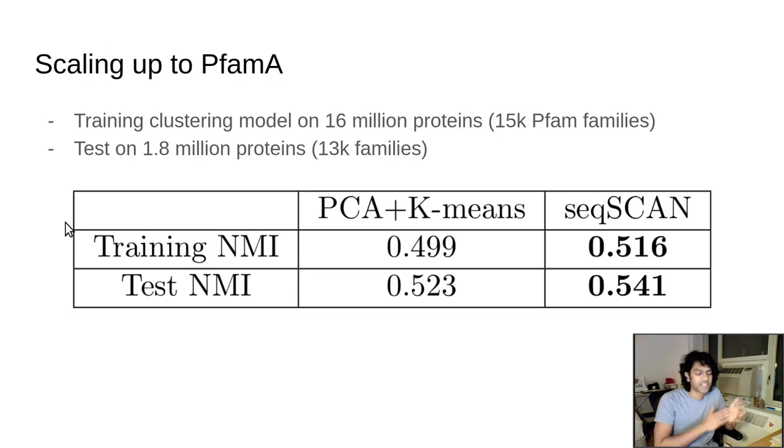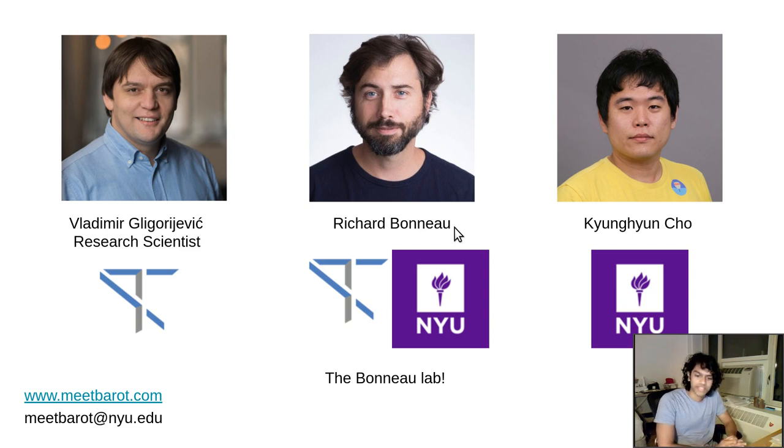This was encouraging, and we wanted to scale up to many millions of proteins. We trained a clustering model on 16 million proteins containing 15,000 protein families, and we tested on 1.8 million proteins with 13,000 families. This means we just trained the clustering model on this big training set, and we did not train at all on these 1.8 million proteins, but our model was going to produce clusters for them. We're using NMI again, measuring the redundancy of our labels with the actual protein family labels, and we see that we outperformed the baseline method pretty well.